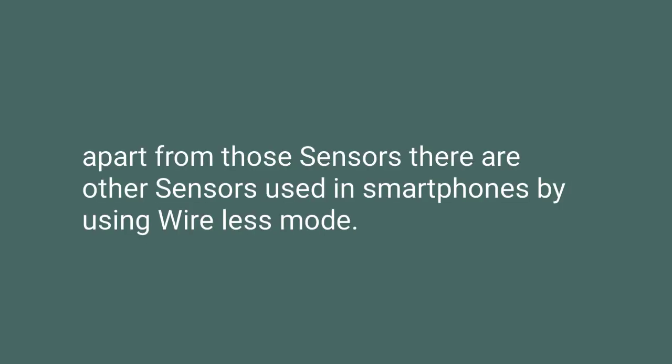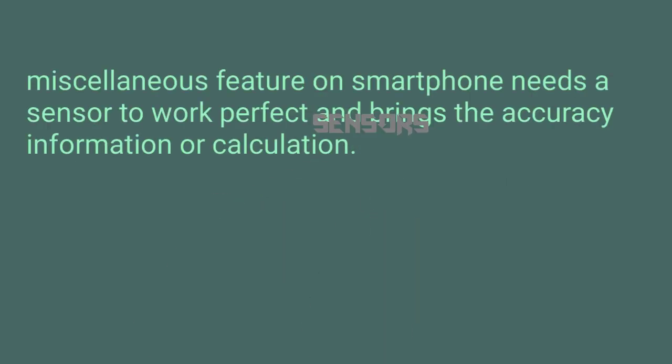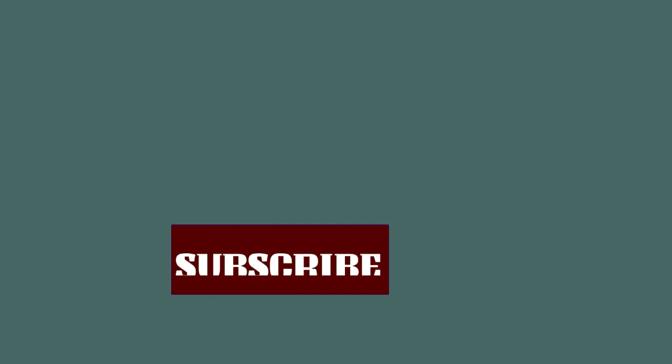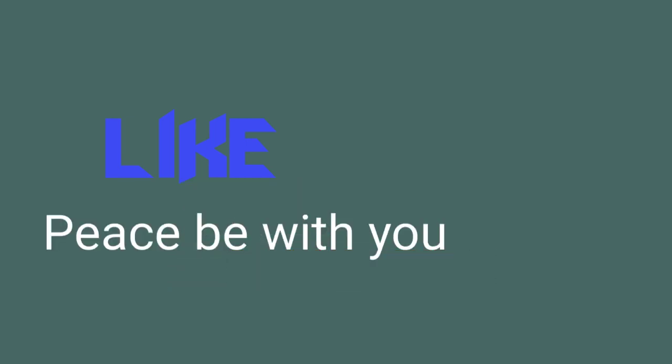That's it guys — I guess now you understand the different types of sensors. Apart from those sensors, there are other sensors used in smartphones via wireless mode. The camera is one of the smartphone sensors too. Any miscellaneous feature on a smartphone needs a sensor to work perfectly and bring accurate information or calculations. This brings me to the end of the video — if you find my videos useful, please like, share and subscribe. As always, peace be with you.